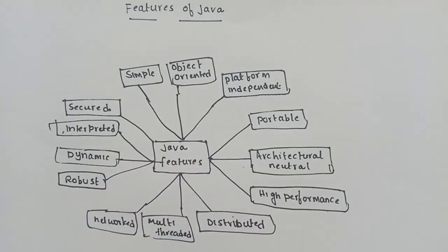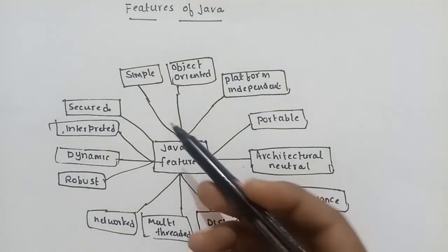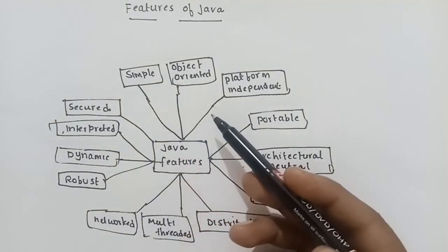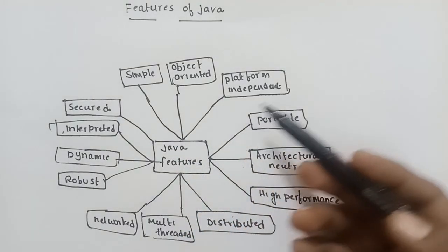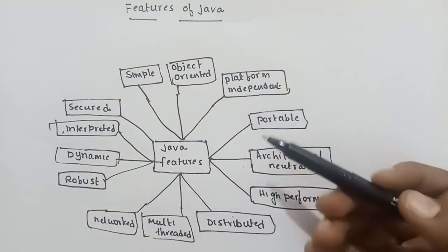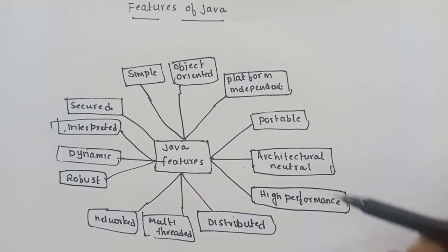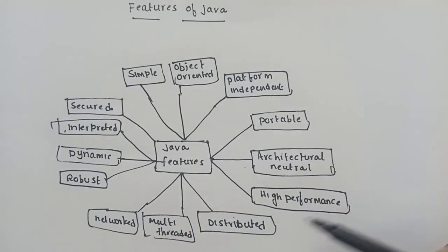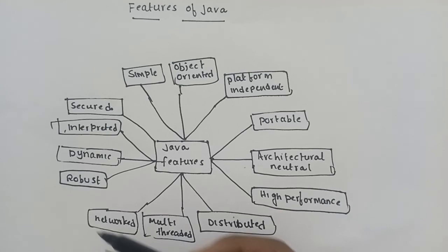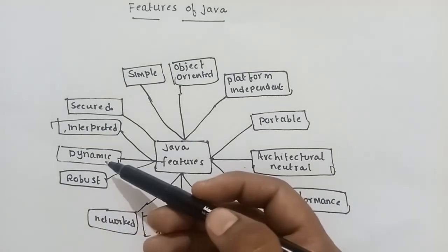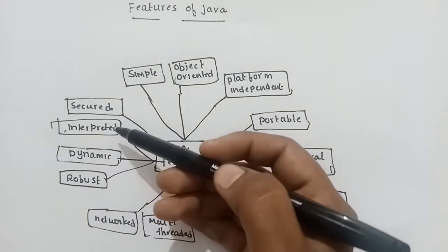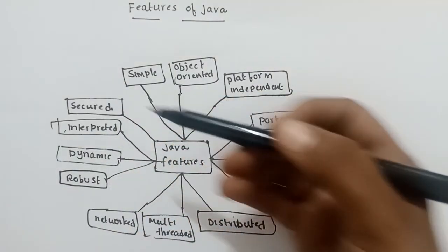These features are Java features: simple, object-oriented, platform-independent, portable, architectural neutral, high-performance, distributed, multi-threaded, network, robust, dynamic, interpreted, and secured.